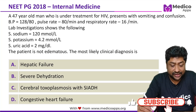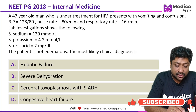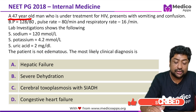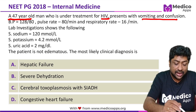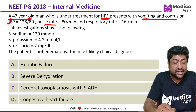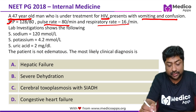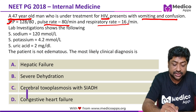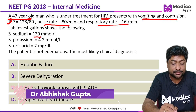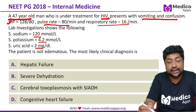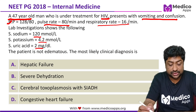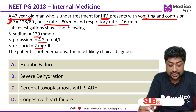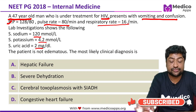This question appeared in NEET PG 2018. It describes a 47-year-old man under treatment for HIV who presents with vomiting and confusion. Blood pressure is normal, pulse rate is 80 per minute, respiratory rate is 16 per minute. Lab investigations show serum sodium of 120, serum potassium of 4.2, serum uric acid of 2 mg/dL, and the patient is not edematous. The most likely diagnosis options are hepatic failure, severe dehydration, cerebral toxoplasmosis with SIADH, and congestive heart failure.